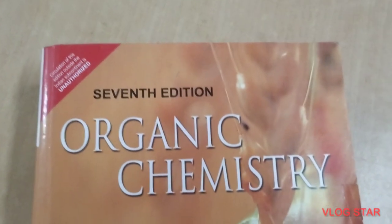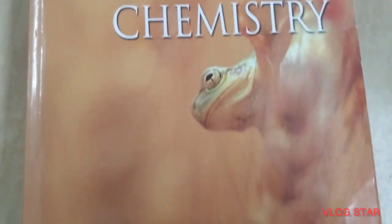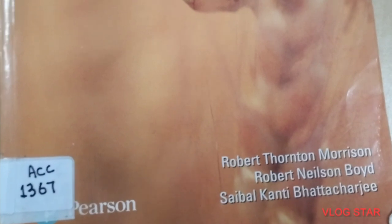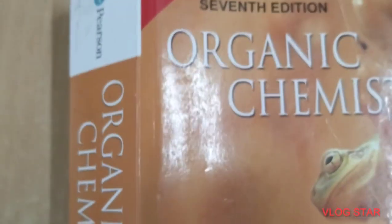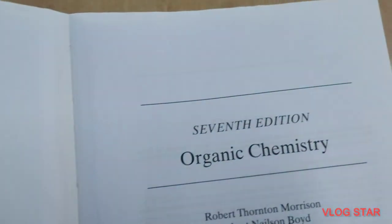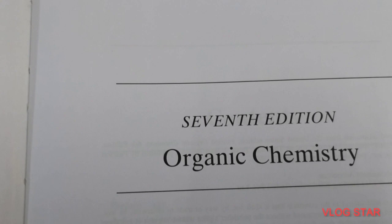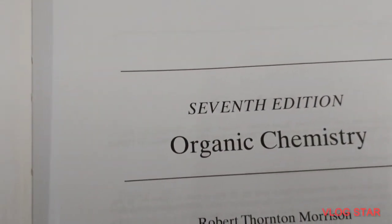Here we have Organic Chemistry book, 7th edition by Morrison and the publication is Pearson. So let's see the book. So this is 7th edition.